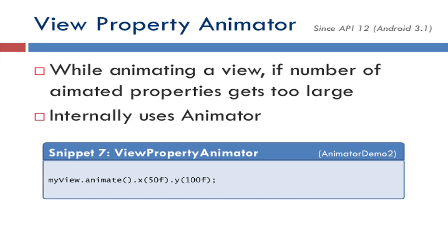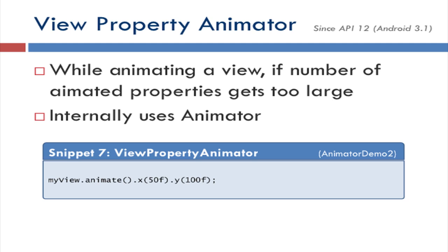To write concise code, use ViewPropertyAnimator, which is new in Android API 12 (Android 3.1) and may not be available on older platforms. The entire earlier example can be written in one line: myView.animate() returns a ViewPropertyAnimator object with methods like x, y, scale, etc. We specify x(50) to go from 0 to 50, and y(100) to go from 0 to 100, simultaneously. One constraint is that ViewPropertyAnimator can only be applied on a single view — not every object. For multiple simultaneous animations on different objects, use AnimatorSet.